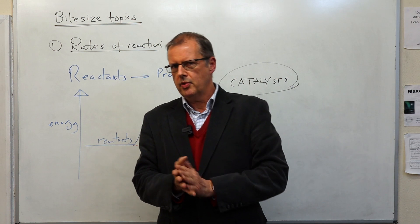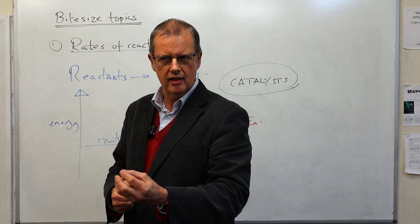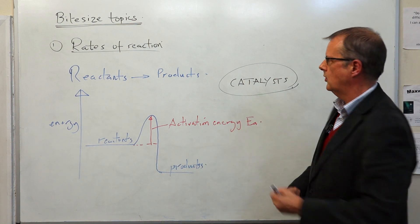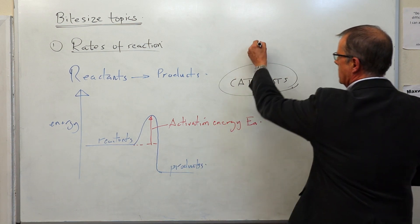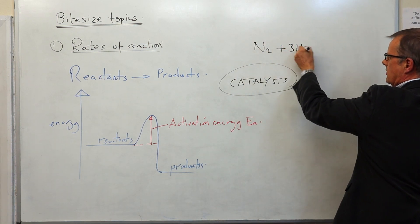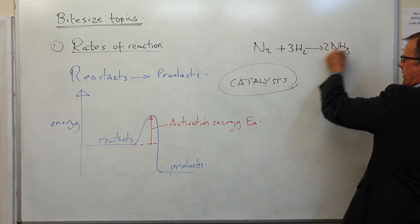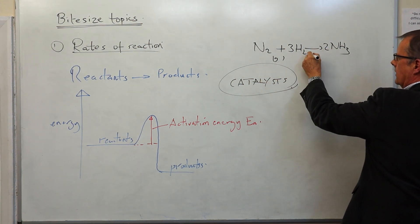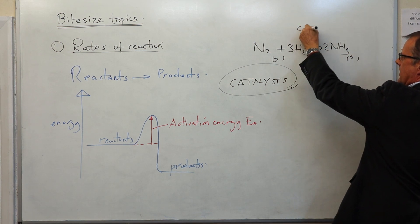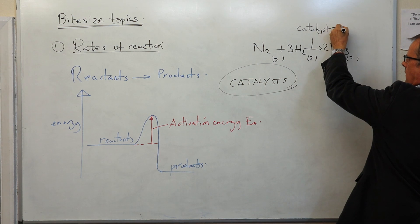Some very well-known examples. The Haber process to make ammonia, used to make fertilizers. In this reaction, nitrogen reacts with hydrogen to form ammonia — these are all gases — and the catalyst is iron metal.